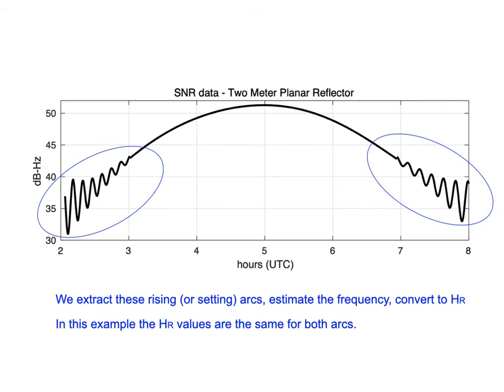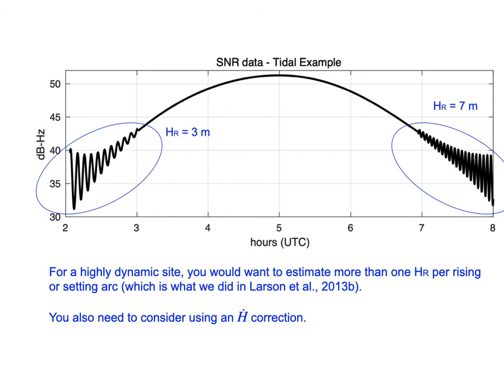Here's a case appropriate for measuring tides or water levels, where H_R is not the same for rising and setting arcs — say three meters on one side and seven meters on the other. In these cases, there's no reason to use one H_R value; you can cut the data into smaller time increments and get a time-varying tidal signal, which is what we did in our paper on Alaskan tides.